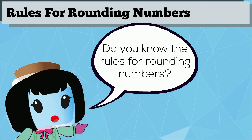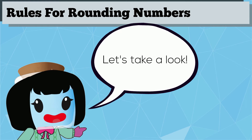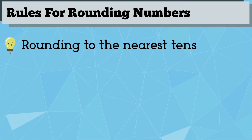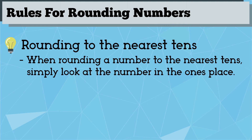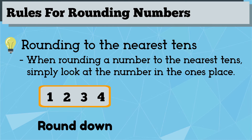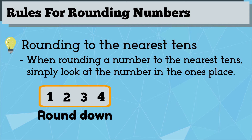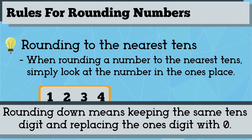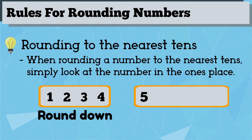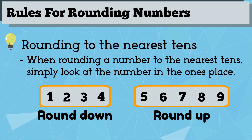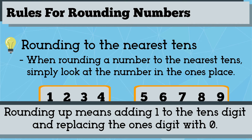Do you know what the rules for rounding are? Let's take a look. First, let's try rounding to the nearest tens. We simply have to look at the number in the ones place. If it is 1, 2, 3, or 4, we round the number down — keeping the same tens digit and replacing the ones digit with zero. If it's 5, 6, 7, 8, or 9, we round the number up — adding one to the tens digit and replacing the ones digit with zero.